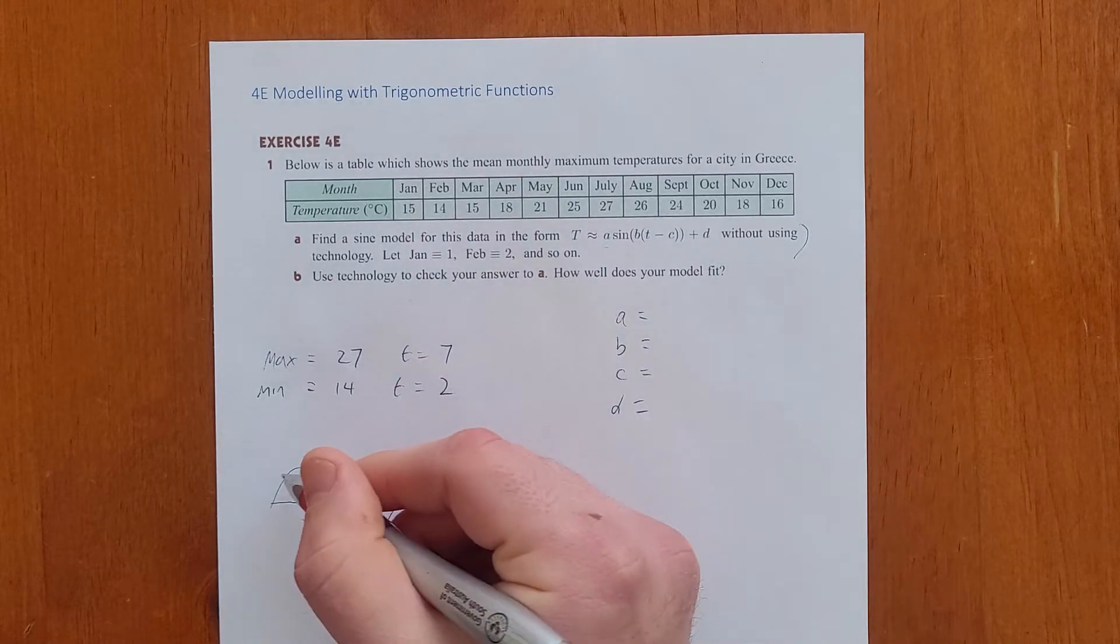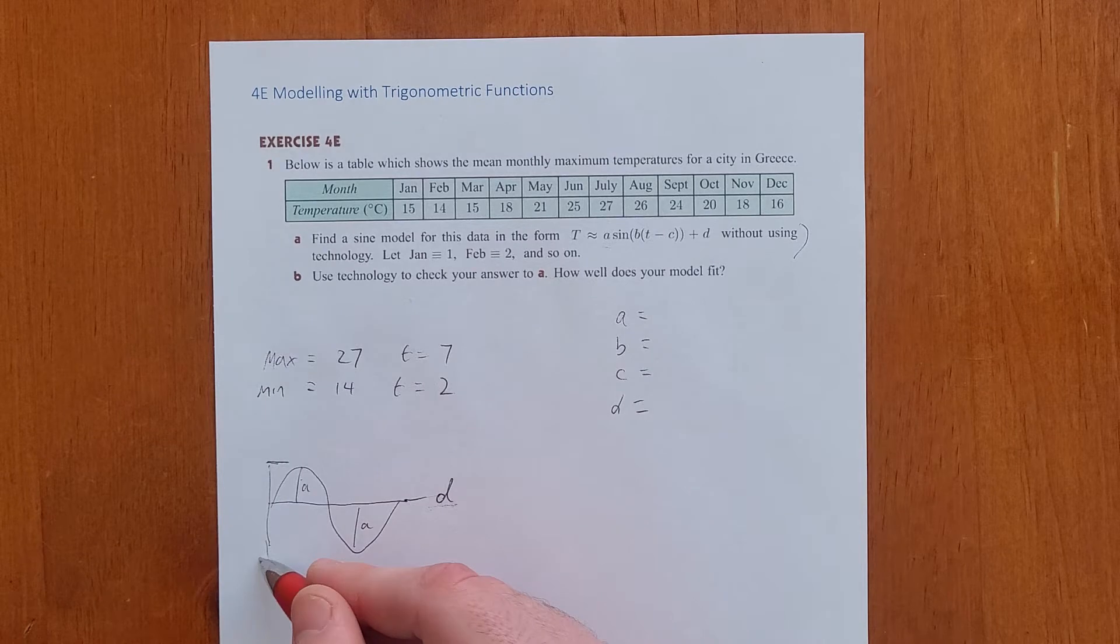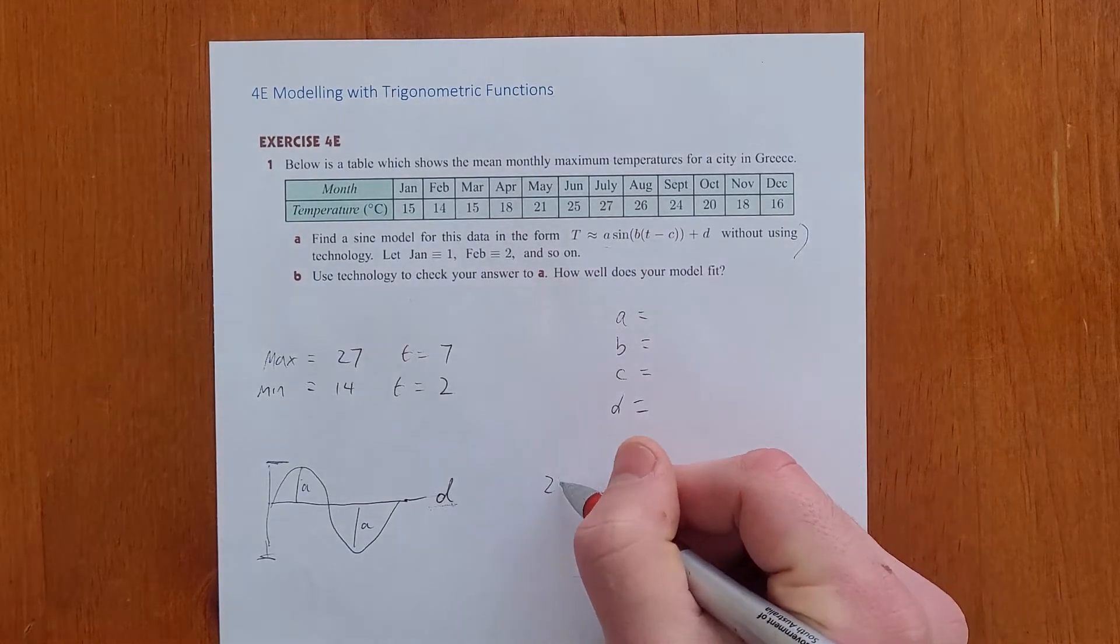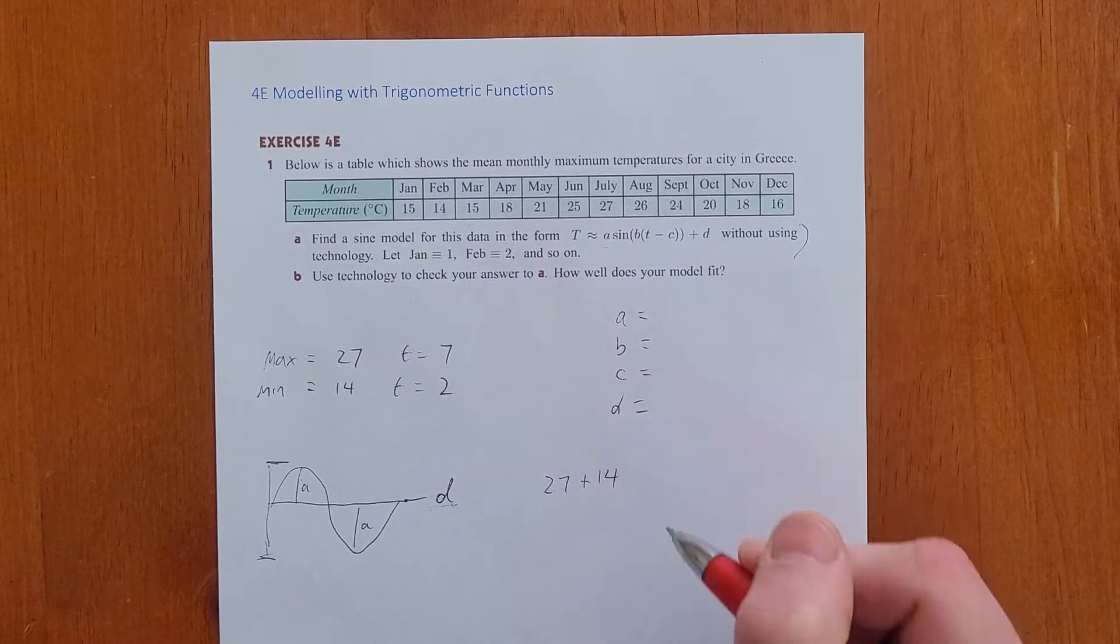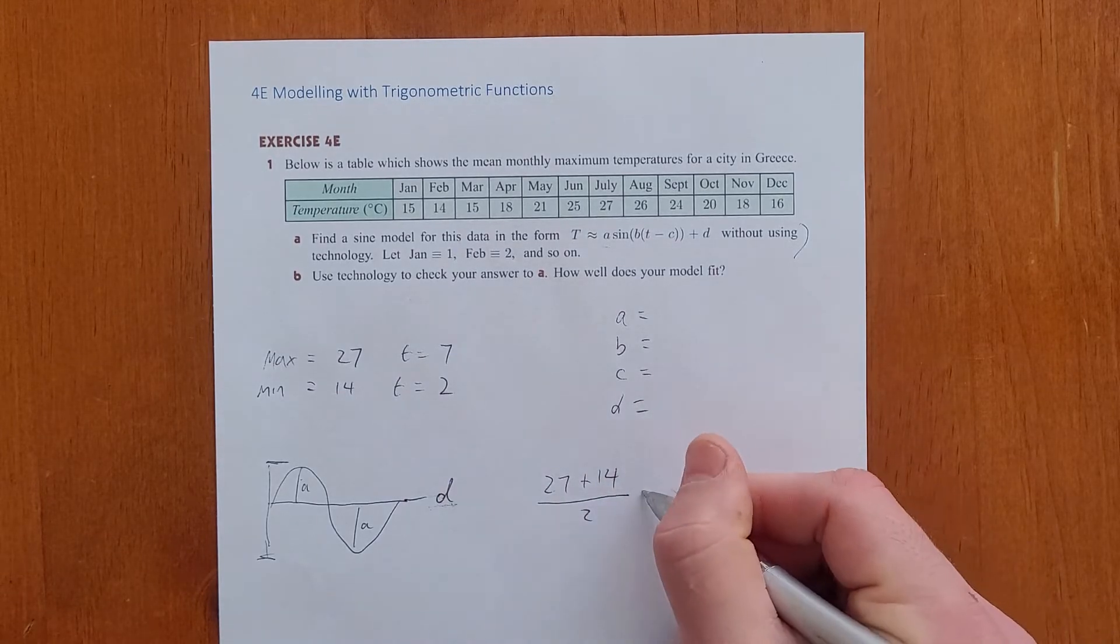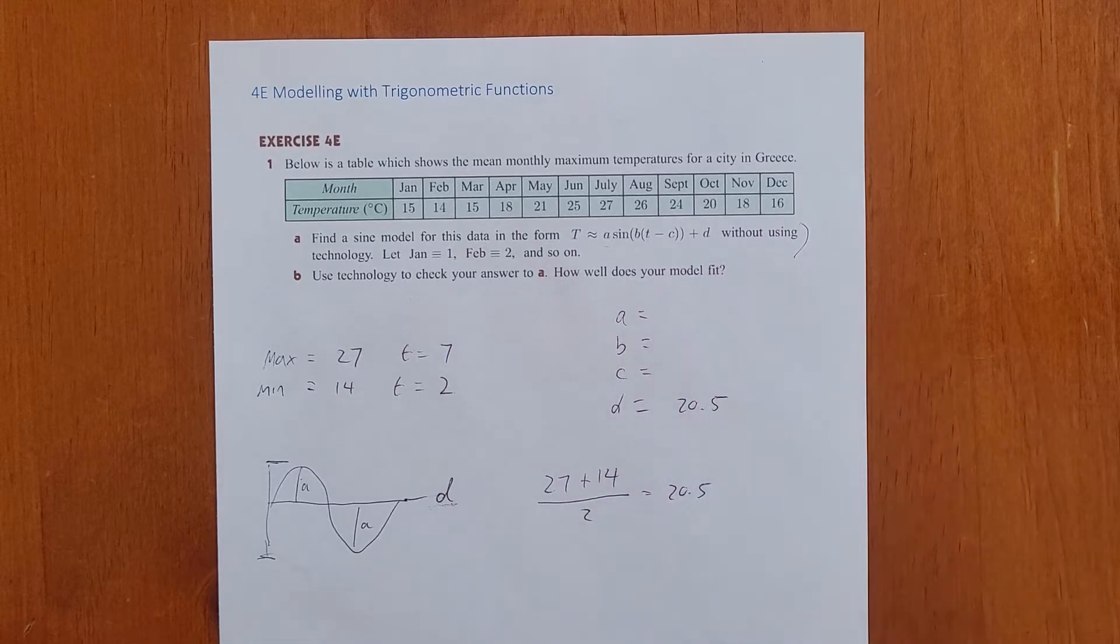Now D, the value of D, will always be halfway between the peak and the trough. So D is always halfway between the maximum and the minimum. So our value of D is going to be the maximum, which is 27, plus 14, and then divide that by 2. So that's going to give us 41 divided by 2. That's going to be 20.5. That's our value of D. That's the principal axes.